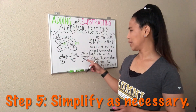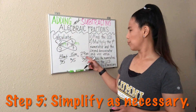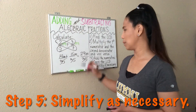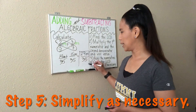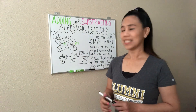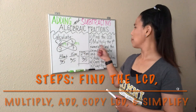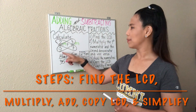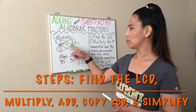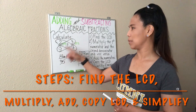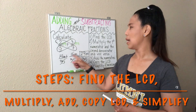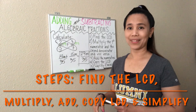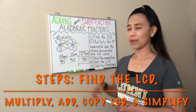Since we don't have common factors for 29 and 35, we cannot simplify that anymore. That will be our final answer. To recap: find the LCD of 35, multiply the first numerator by the second denominator, write it down, multiply the first denominator by the second numerator to get 15, add the numerators, copy the common denominator. And don't forget to write your variable.